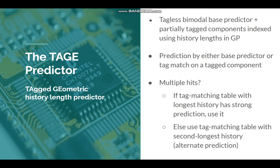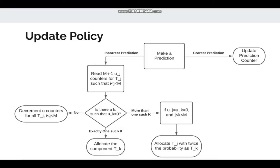The TAGE predictor uses a base bimodal predictor and further uses tagged components. These tagged components are history tables indexed using variable history lengths, with tags stored in them. Whenever there is a particular branch address, we first try to index and see if there is a tag hit in any of the components. For the component with the highest branch history length we choose the prediction made by that, and if there is no component where a tag hit occurs, we use the prediction made by the base bimodal predictor. This is the flowchart corresponding to the prediction process.